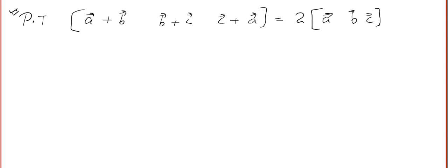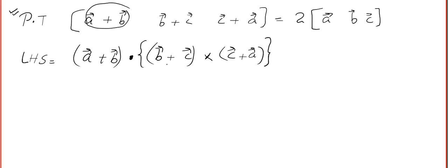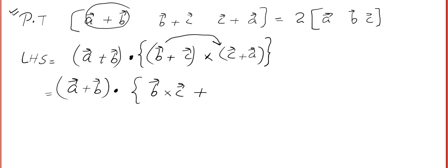All the problems in this video are very important because they will give you a strong base. We start with the left-hand side: it is an STP, so write the three vectors (A+B, B+C, C+A) and put one dot and one cross. Distributing the cross product: (A+B) · [(B×C) + (B×A) + ...].